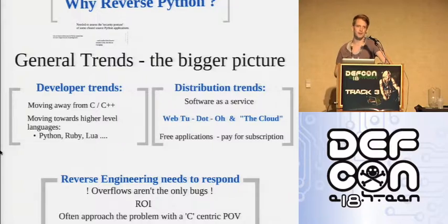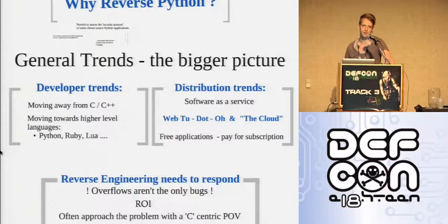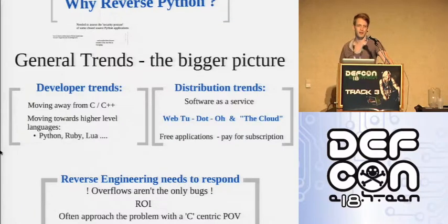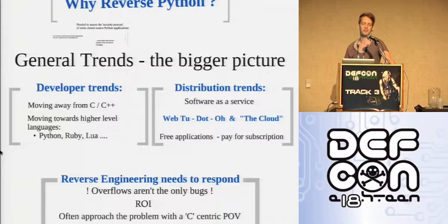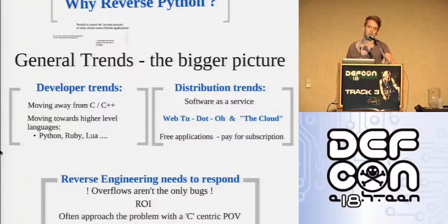High level languages like Python, Ruby, Lua are much more rapid to develop in. The people developing in them are straight out of university and can do Python much better than C. So there are more developers, it's cheaper to develop, and it's cross-platform. There's also a change in distribution - five or six years ago you'd always download an application, but now it's all web 2.0, cloud, software as a service.